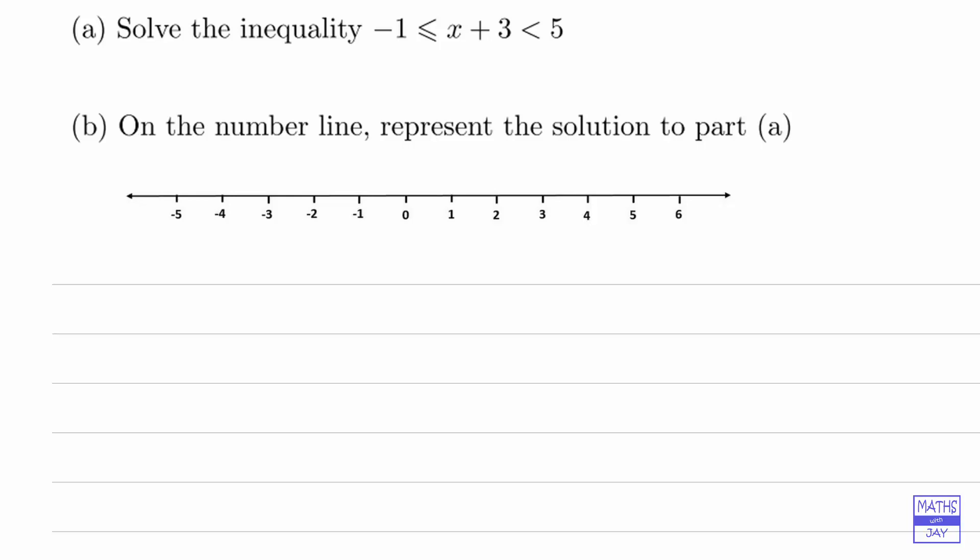So looking at part a, to solve this we just want to end up with the x on its own in the middle. At the moment it's got a 3 being added onto it, so all we need to do is the same to each part of the inequality.